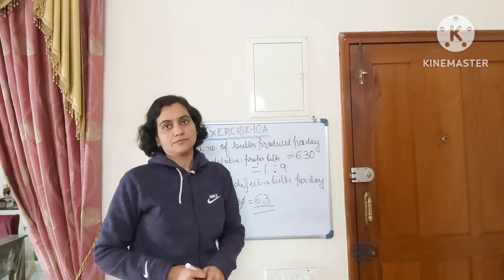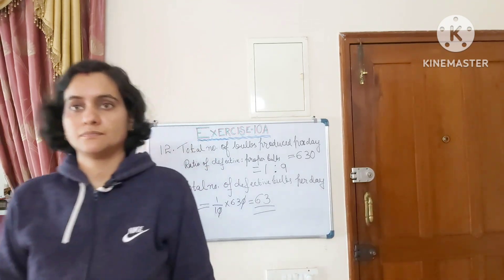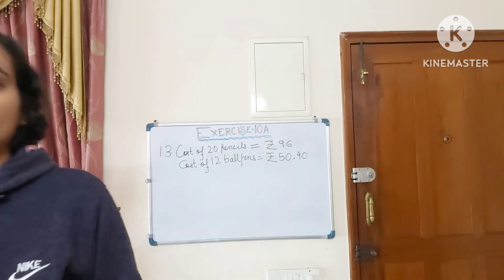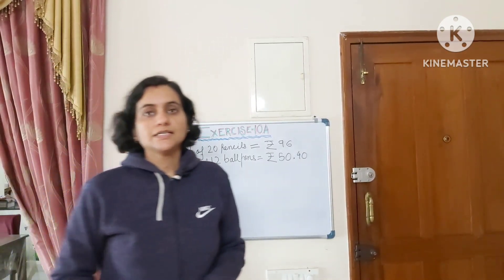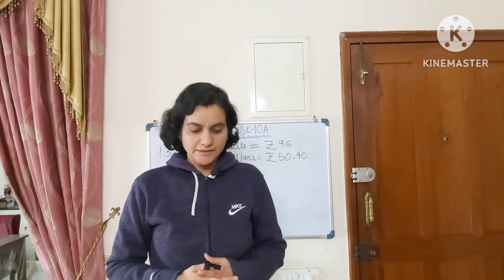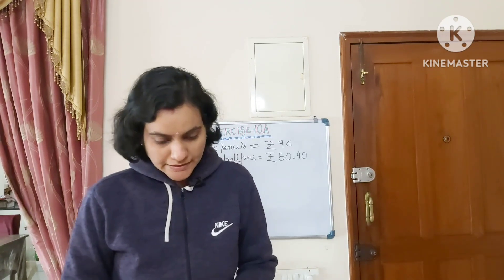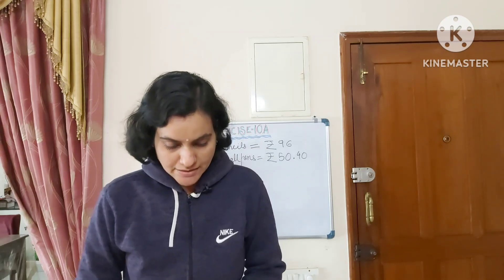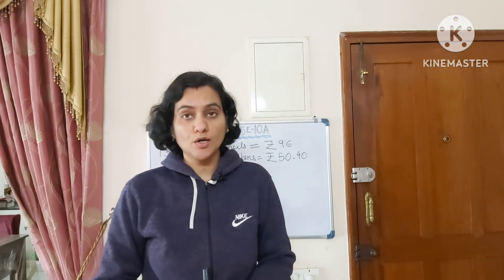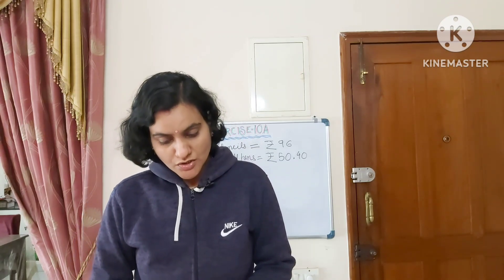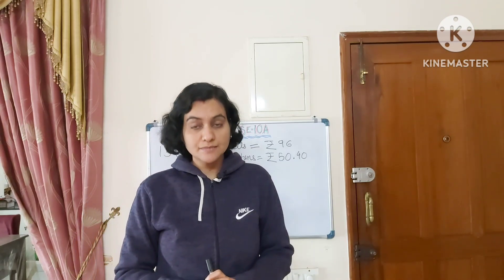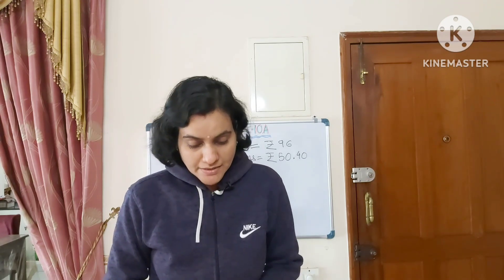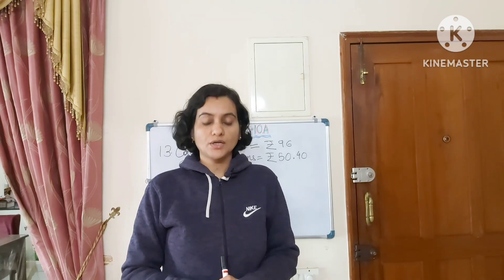End of question number 12. Now starting question number 13, which asks: find the ratio of the price of a pencil to that of a ball pen, if a pencil costs Rs. 96 per score and ball pens cost Rs. 50.40 per dozen.